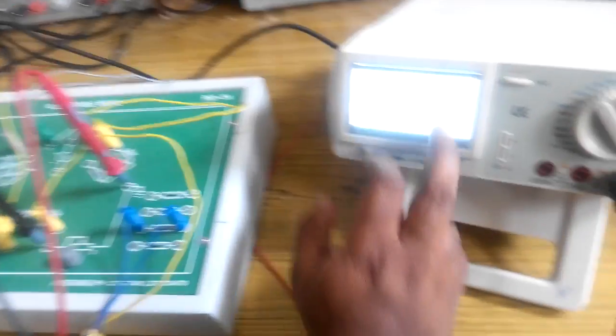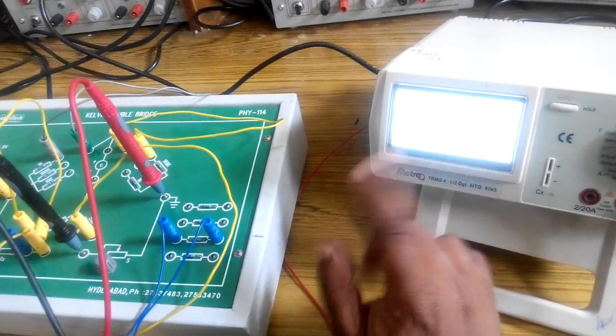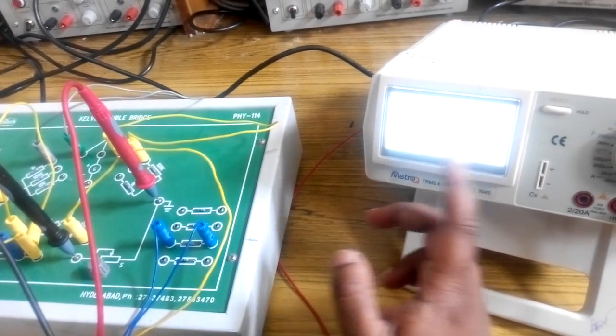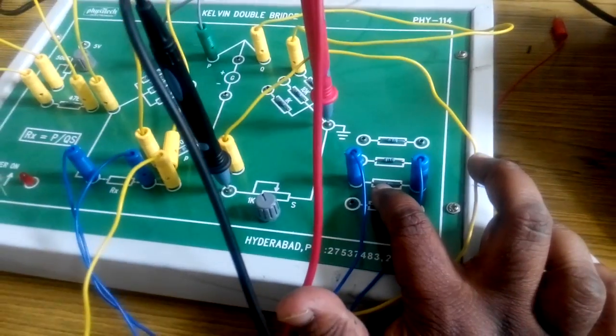Now this resistance into the ratio that is kept over here, 341.1 into 1 by 100. So, the measured value of resistance is 3.411 ohms. The applied value of resistance is 3.5 ohms over here.